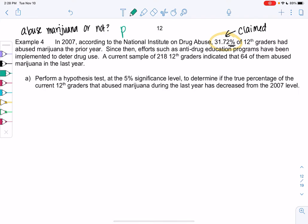So these are things I think about before I even go too far. Proportion land, so I shouldn't see mu anywhere. Since then, efforts as anti-drug education programs have been implemented to deter drug use. We have a current sample of 218, n equals 218 12th graders, indicated that 64 of them had abused marijuana in the last year. So that means my sample P hat will be 64 out of 218 who had abused marijuana.